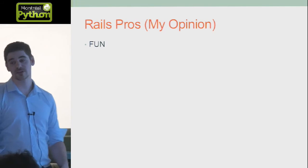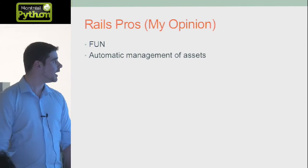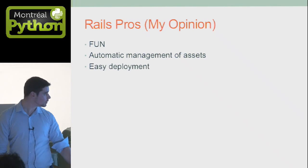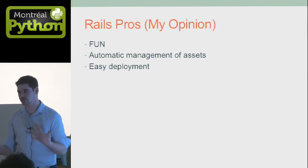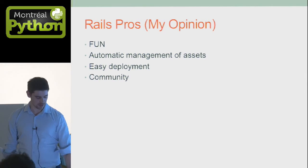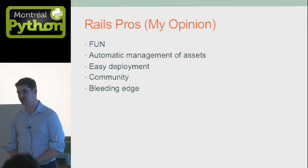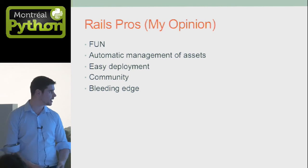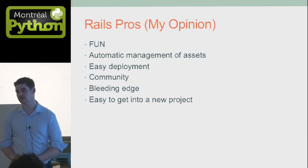So why do I like Rails? Because it's fun — that's the main reason. I code mainly in Rails just because I have fun doing it. The automatic management of assets is a big pro. It's really easy to deploy because Ruby developers really hate doing redundant stuff, so they created libraries like Chef to deploy easily. The community is pretty nice and it's bleeding edge — when something new appears, most of the time it gets implemented in Ruby or Rails because we like to try new things. And it's easy to get into a new project, which is really fun when you're a consultant.